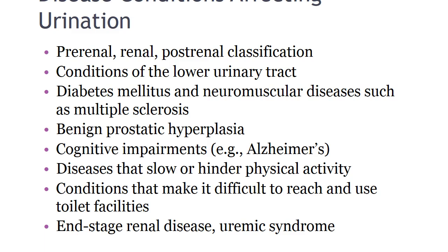Disease processes that affect urinary elimination are generally characterized as pre-renal, renal, or post-renal. Decreased blood flow to the kidney is pre-renal. Conditions of the renal tissue are renal. Obstruction of the lower urinary tract preventing urine flow from the kidneys is post-renal. Conditions of the lower urinary tract include narrowing of the urethra, altered innervation of the bladder, or weakened pelvic or perineal muscles — all of which can affect urinary elimination.